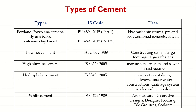White Cement is also a type of Ordinary Portland Cement that is white in color. It is costlier and is used for architectural and decorative purposes such as precast curtain walls, facing panels, terrazzo surfaces, and all sorts of interior and exterior decorative works, external renderings of buildings, and facing slabs.